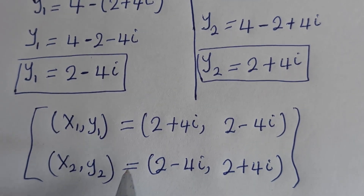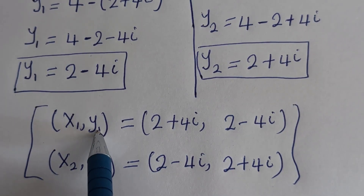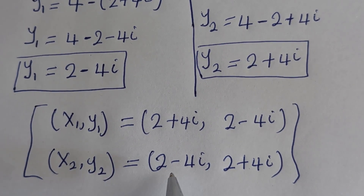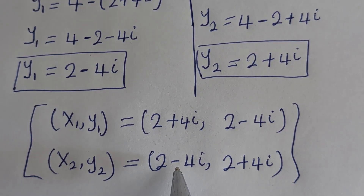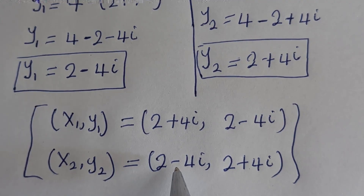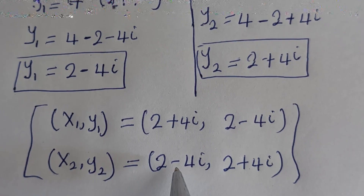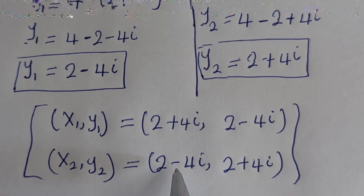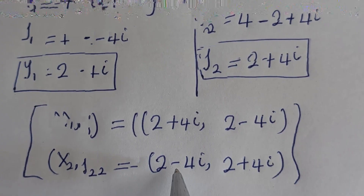These are the values of x and y. You can see that the value of x1 is equal to the value of y2, and the value of y1 is equal to the value of x2. We may check to confirm if this answer is right or wrong. We have the given equation: x plus y is equal to 4. Let us check using x1 and y1: x plus y is 2 plus 4i plus 2 minus 4i. The imaginary parts cancel, giving 2 plus 2, which must be equal to 4. And of course 2 plus 2 is 4, which is true.